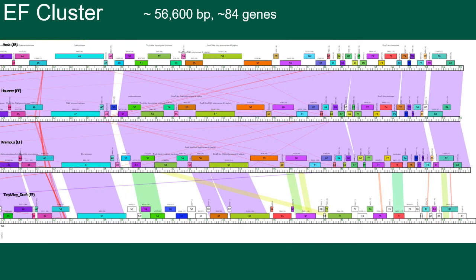And this pattern continues towards the end of the genome as well, with the other EF phage being very genetically similar to each other, and Tiny Miney kind of sticking out from the rest, with a lot of areas of white indicating little to no similarity to the other phage.